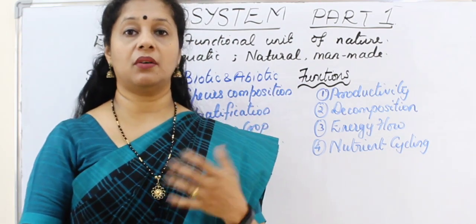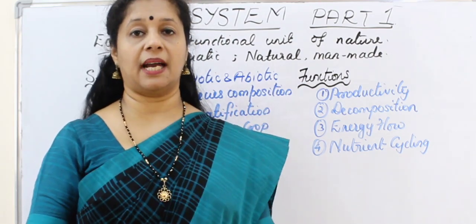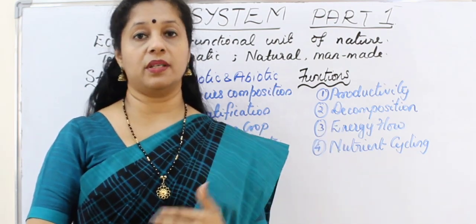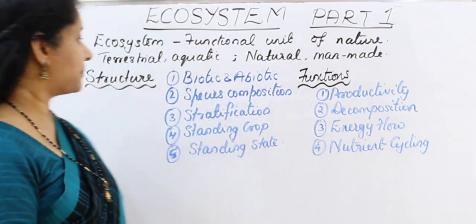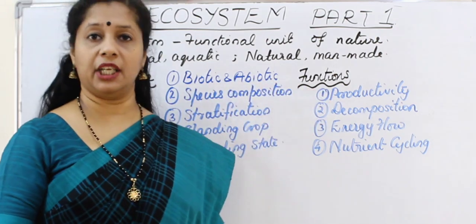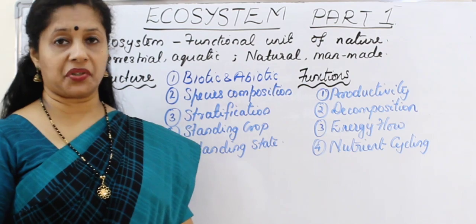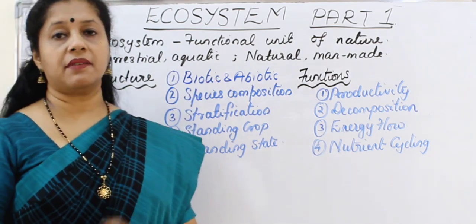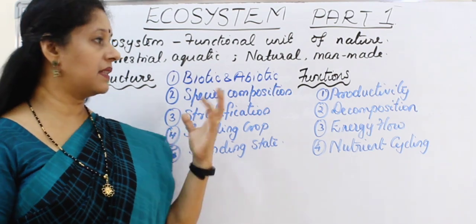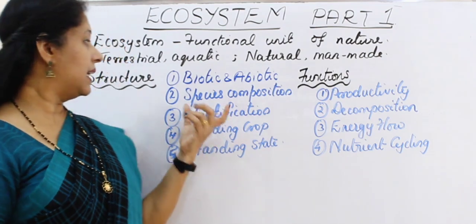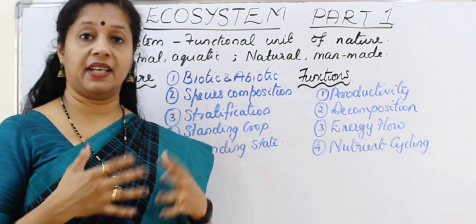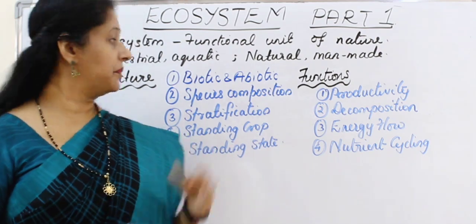In this chapter, first we talk about how the biotic factors or the productivity happens and how the interaction of different components are happening and finally how the energy flow is happening. When we start with ecosystem, we need to distinguish between the structure and the functions. When we talk about structure, first is the interaction happening between biotic and abiotic components of the ecosystem — that itself is the main characteristic. Second characteristic is species composition — the type of plants and animals living there.